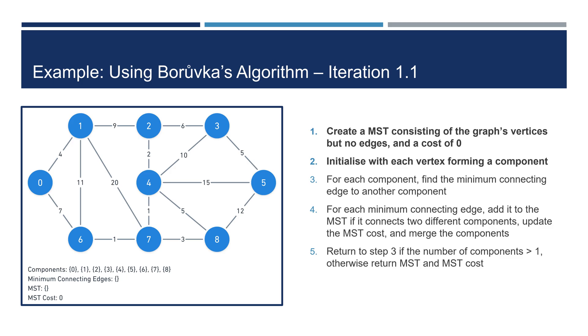Now we'll go through an example. We'll start by creating an MST with all the vertices but no edges. The grey edges represent edges that are in the original graph but not in our MST. At the start, there are nine components as each vertex forms its own component.